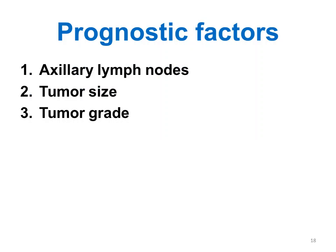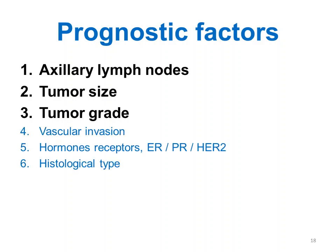Prognostic factors are very important — they determine the prognosis of patients after treatment. The three most significant are: the number of axillary lymph nodes involved, the size of the tumor, and the grade. Other prognostic factors that are not as significant include vascular invasion, hormone receptor status (estrogen receptor, progesterone receptor), HER2 (human epidermal growth factor receptor 2), and histological type.